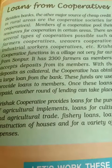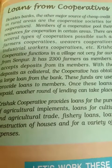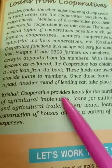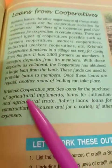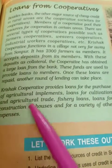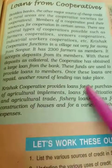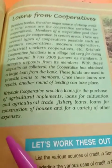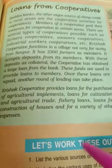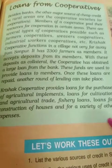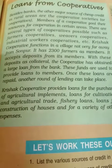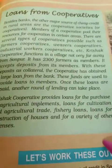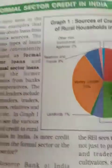The bank provides loans to the cooperative, and the cooperative can then get loans for purchase of agriculture implements, cultivation, agriculture trade, fisheries, construction of houses, and a variety of other expenses. This is how the cooperative society works as a source of credit.